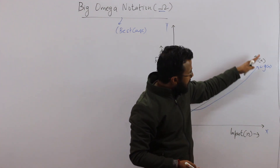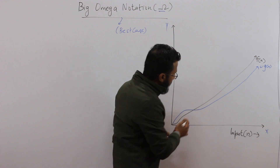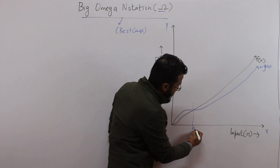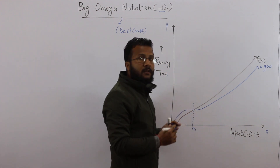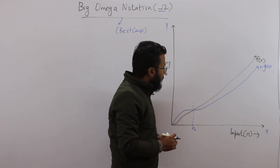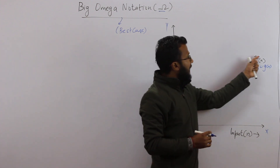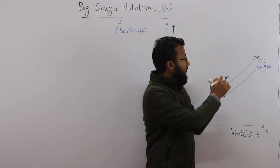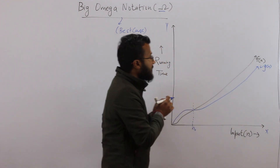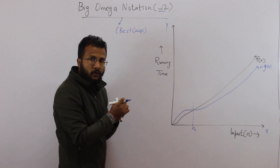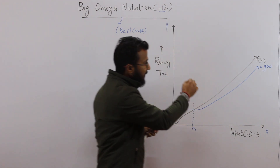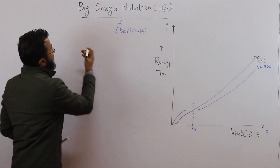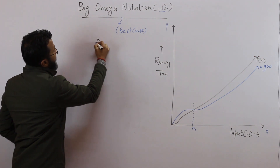The curve c times g(n) comes below the function f(n) only after a certain point. This point is our threshold point, called n naught. So for all values of n greater than or equal to n naught, f(n) is always lower bounded by c times g(n). If we can show this, then we can say f(n) is Omega of g(n). So let's write the definition of Omega notation.